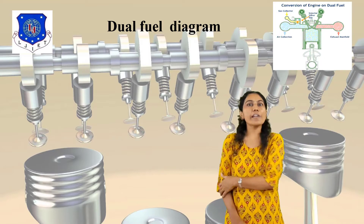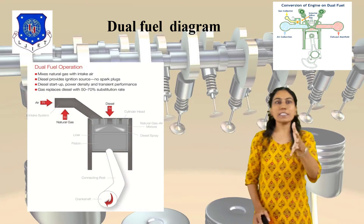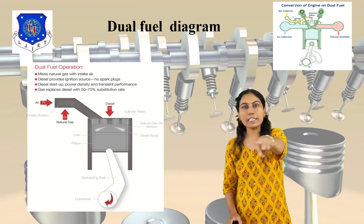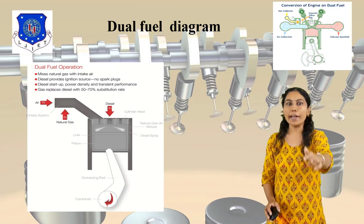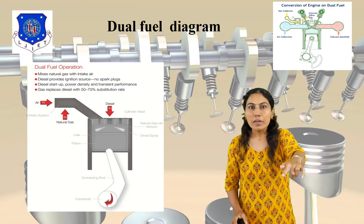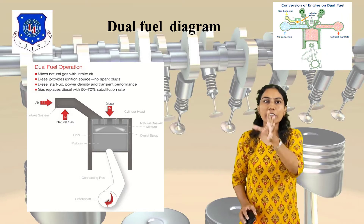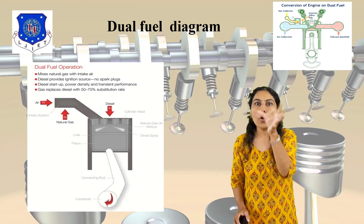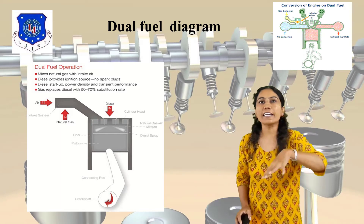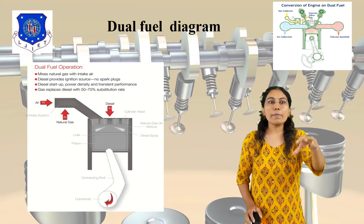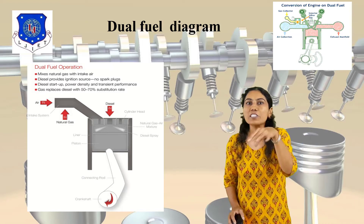In the dual fuel operation, air is entered, then natural gas and diesel are connected. The natural gas intake air and diesel provide ignition — no spark plug is required. Diesel handles start-up, power density, and transient performance. Diesel can be replaced at 50 to 70% substitution rate.